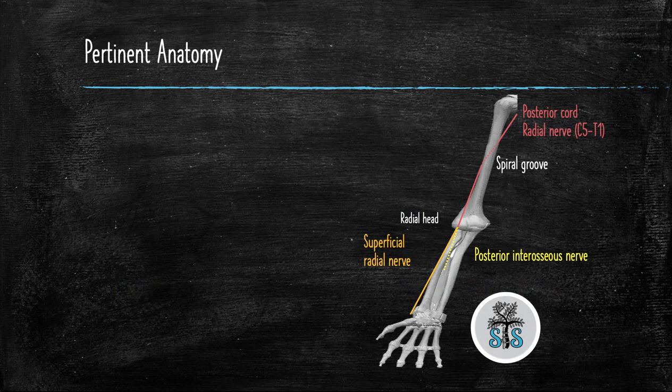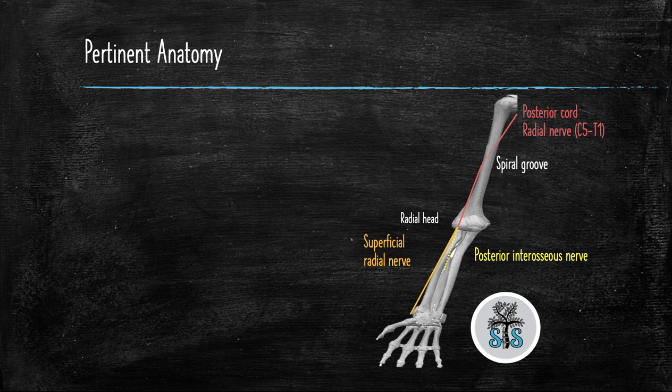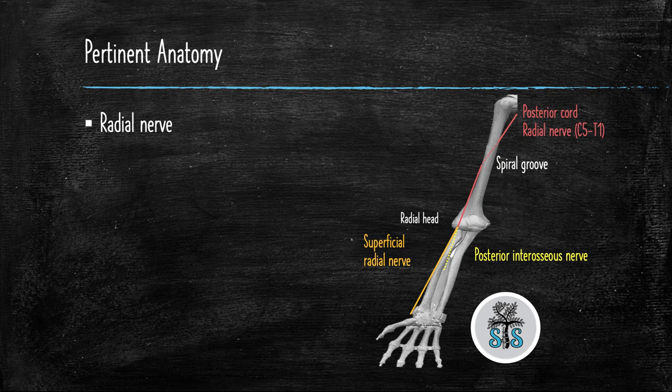When treating humeral shaft fractures, you must know everything about the radial nerve. Let's now go over some of the most important aspects of the radial nerve that you should know. The radial nerve is derived from the posterior cords of the brachial plexus with contributions from C5 through T1.